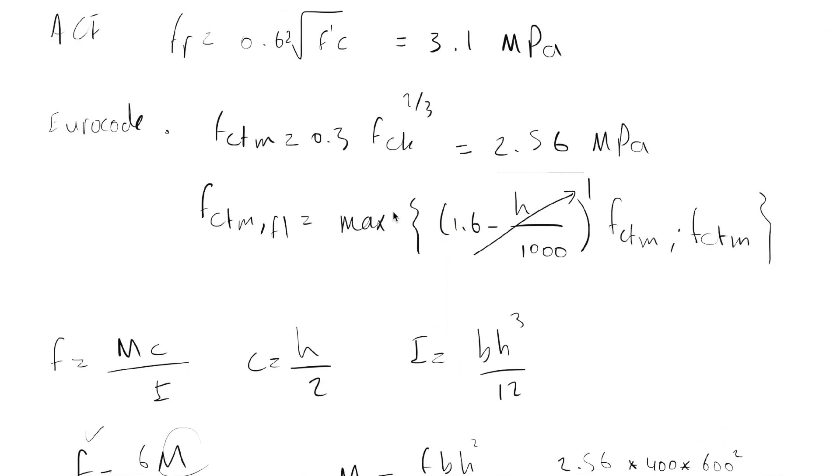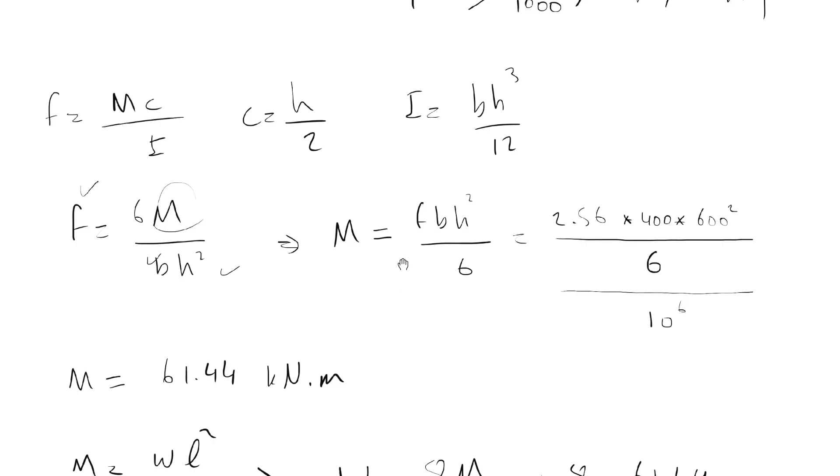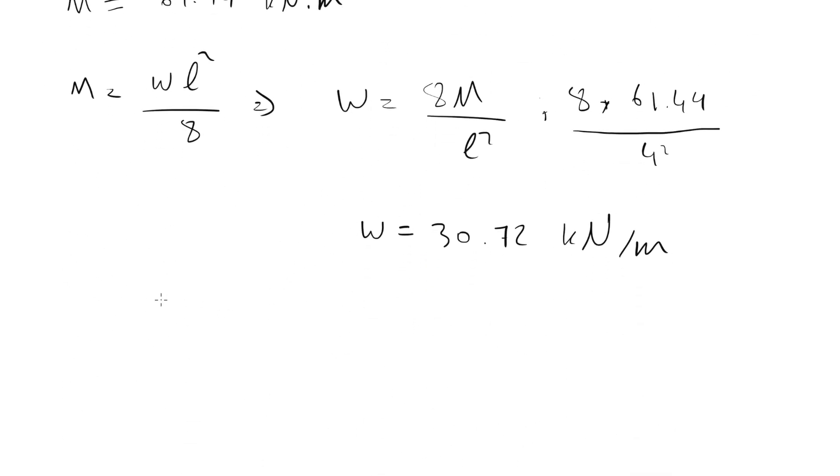Now, to be more precise, we should also reduce the dead load of the beam. So W of the beam equals to 24 kilonewton per meter cube multiplied by 0.4 meter multiplied by 0.6 meter, the dimensions of the beam. It equals to 5.76 kilonewton per meter.